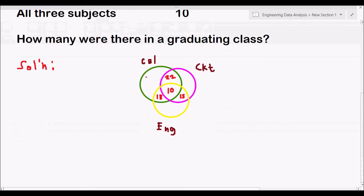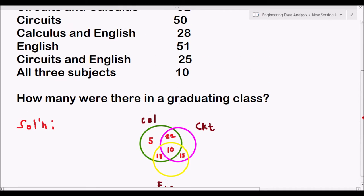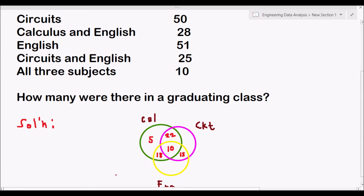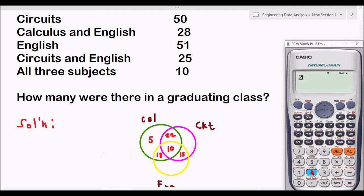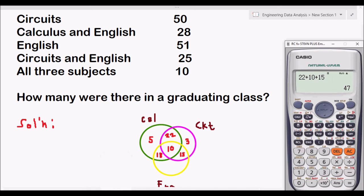We will do the interpretation later of this one. Then, we have people who like circuits, that will be 50. We have 22 plus 10 plus 15, so you have 47. 47 minus 50, 3. In this region there is only 3 students.